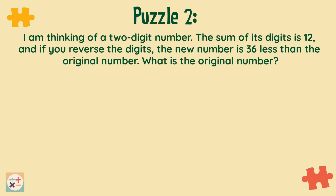The sum of its digits is 12, and if you reverse the digits, the new number is 36 less than the original number. What is the original number? The original number is 84.